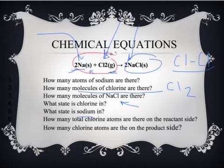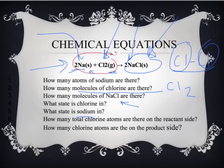How many total chlorine atoms are there on the reactant side? Remember, the reactant side is over here. There are two atoms of chlorine. One atom is bonded to the other, two atoms. How many chlorine atoms are on the product side? Here's the product side. There's two atoms of chlorine.